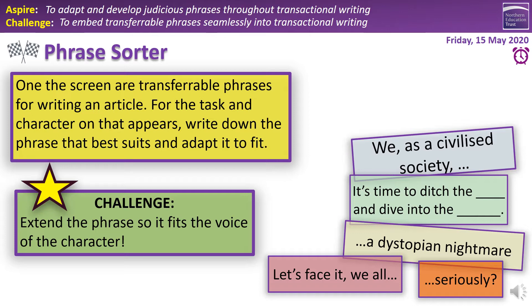'A dystopian nightmare' is a nice one to use — dystopian means a future where everything has gone wrong, so you can describe how if we don't change something we're heading towards a dystopian nightmare. Watch the spelling: it's D-Y, not D-I. 'Let's face it, we all' is good — you're appealing to the audience: 'Let's face it, we all like a burger every now and again, don't we? However, too many of these will be detrimental to our health.' And finally a little sarcasm, which shows tone: 'Teenagers love to vote. Seriously?' For the task, choose the phrase that best suits the character shown and adapt it to fit them.